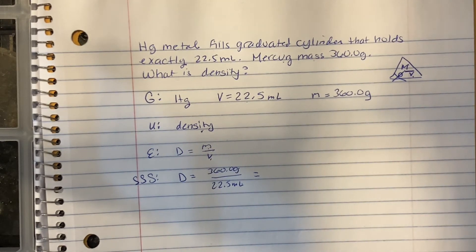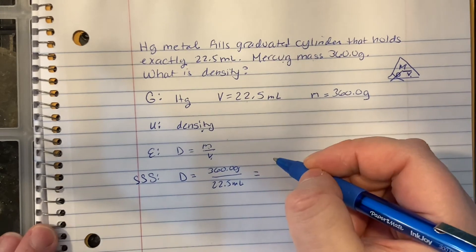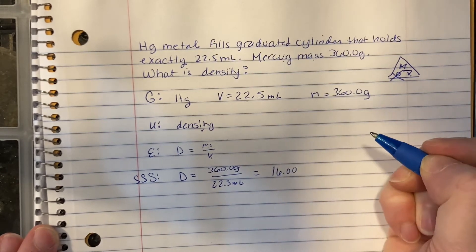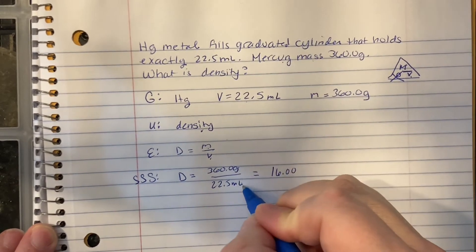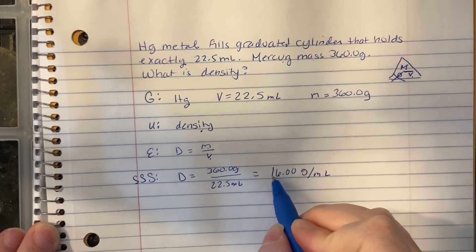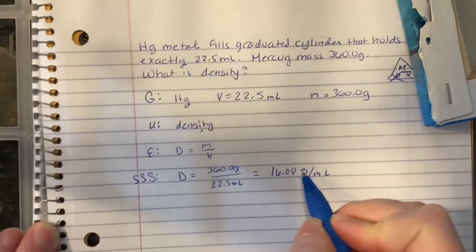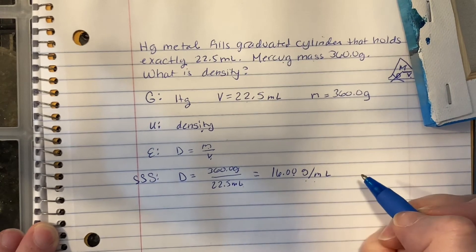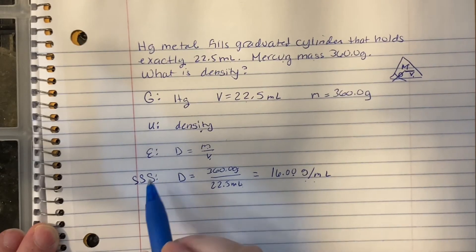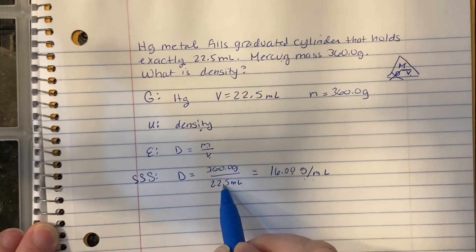360.0 divided by 22.5. And that gives us 16.00 grams per milliliter, because we always write our units down. So the magnitude is 16.00 from the calculator, and our units are grams per milliliter. So we substituted, we solved, and now we need to do sig figs.